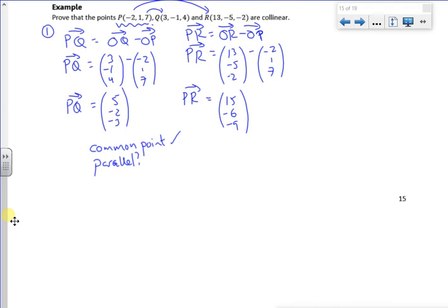So if you look at P to Q, that's 5, minus 2, minus 3. But if you look at P to R, can you see that it's 3 lots of P to Q? It's 3 lots of 5, minus 2, minus 3. So because they're multiples of each other, it's okay.